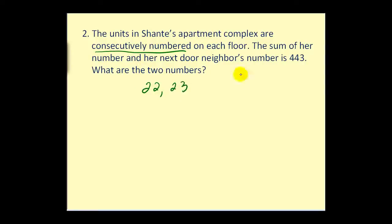Or if one of the doors was 45, the next door would be 46. So we need to represent this relationship using variables. So if x equals the first number, then the pattern that we see here is we have to add one to get to the next consecutive number. So x plus one would equal the second number.